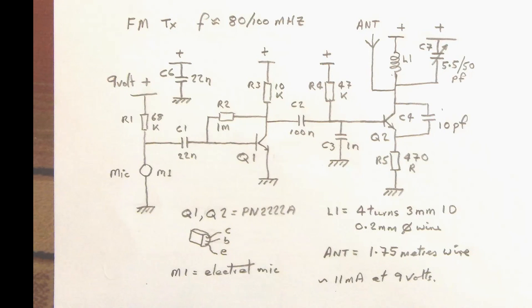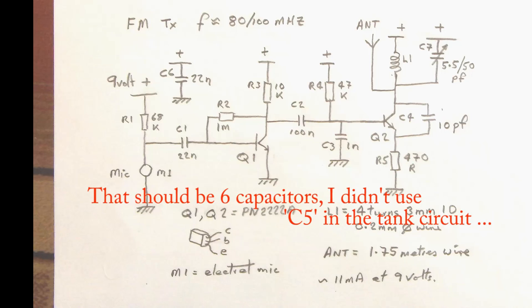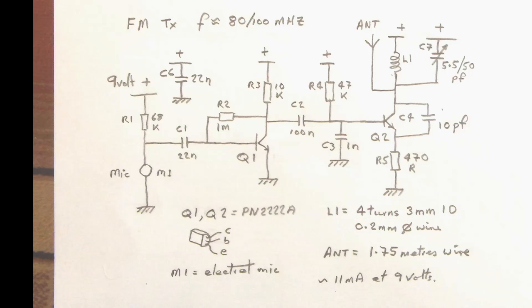You'll see it's got 5 resistors and 7 capacitors and 2 transistors, the microphone and the coil. You'll see I've got the frequency marked at the top there as 80 to 100 MHz.